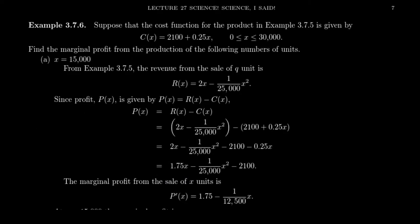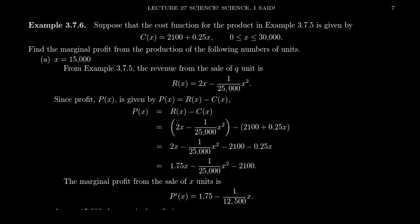Let's do one final example combining cost and revenue. We'll keep the same revenue function from before — R equals 2x minus (1/25,000)x-squared — but use a different cost function this time: a linear cost function with a fixed cost and a variable cost directly proportional to the number of items sold.